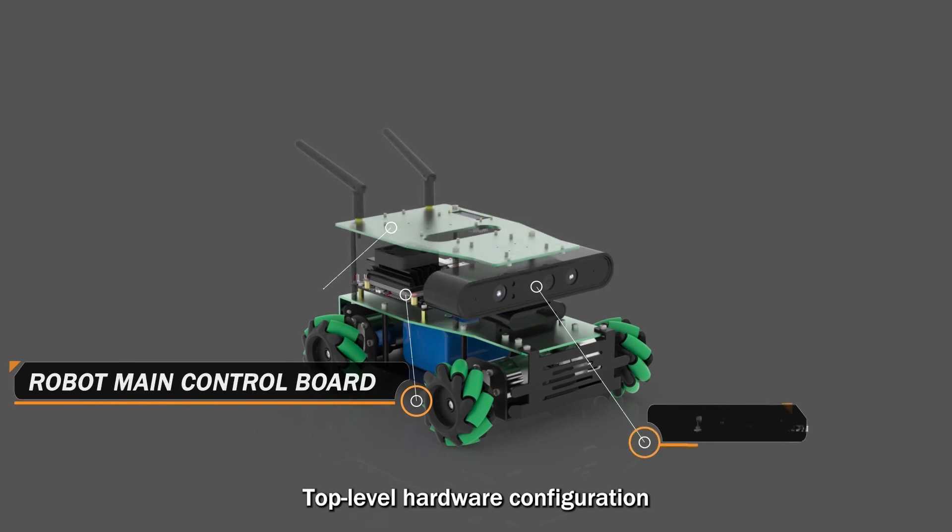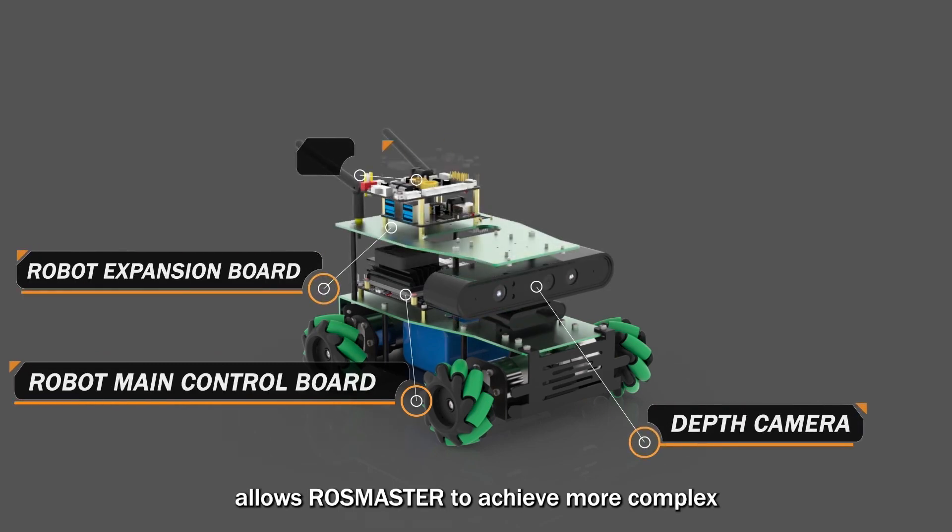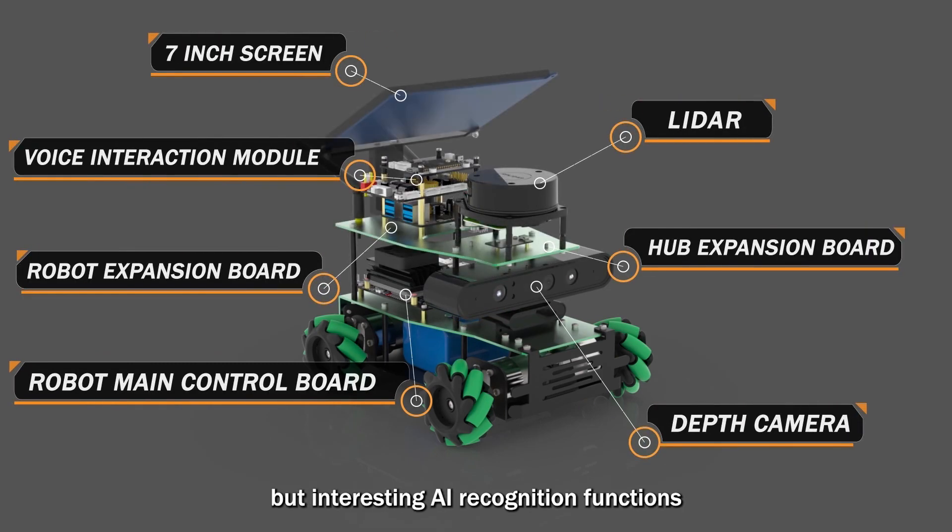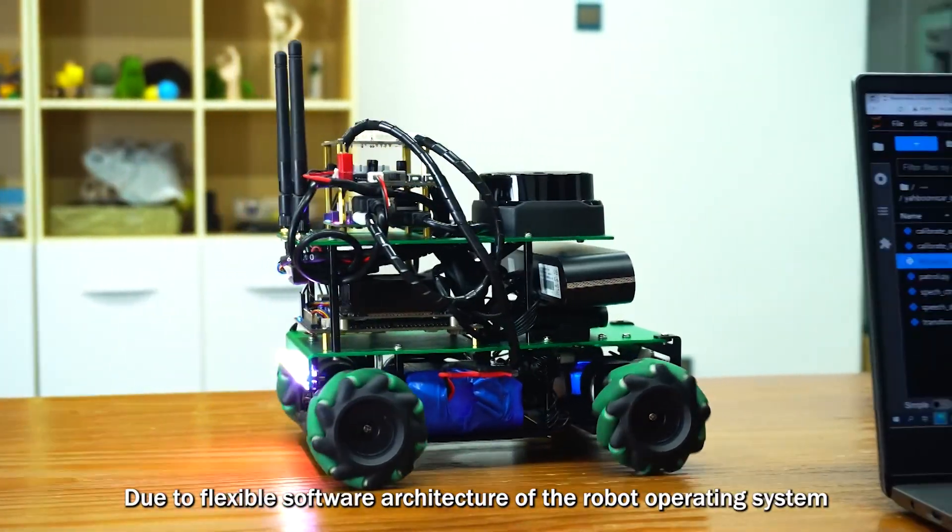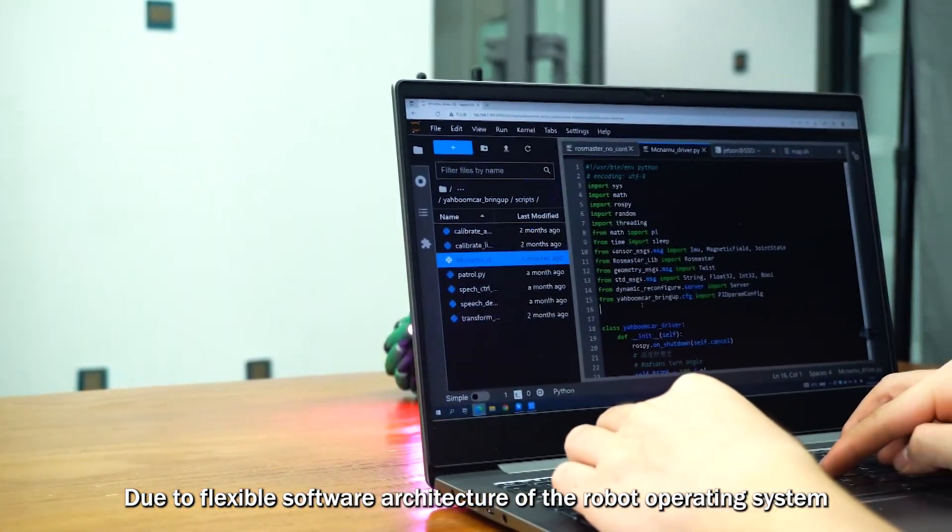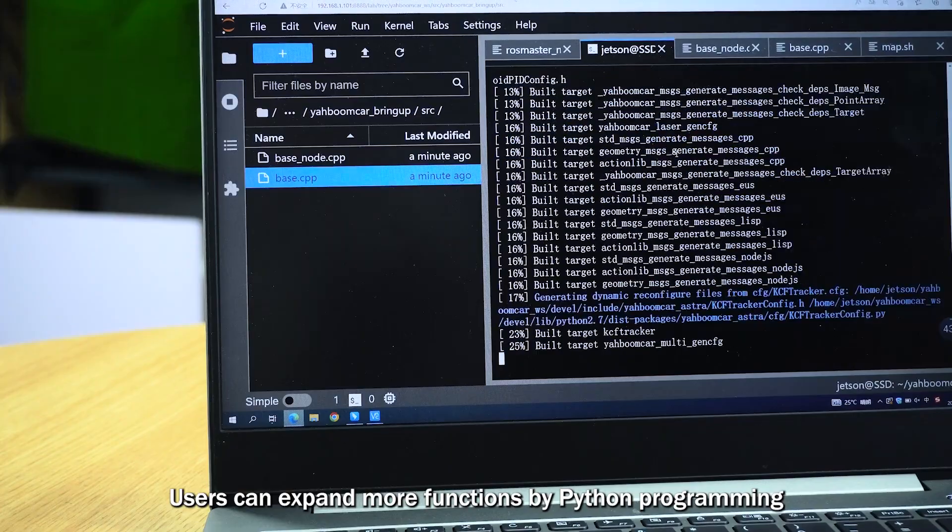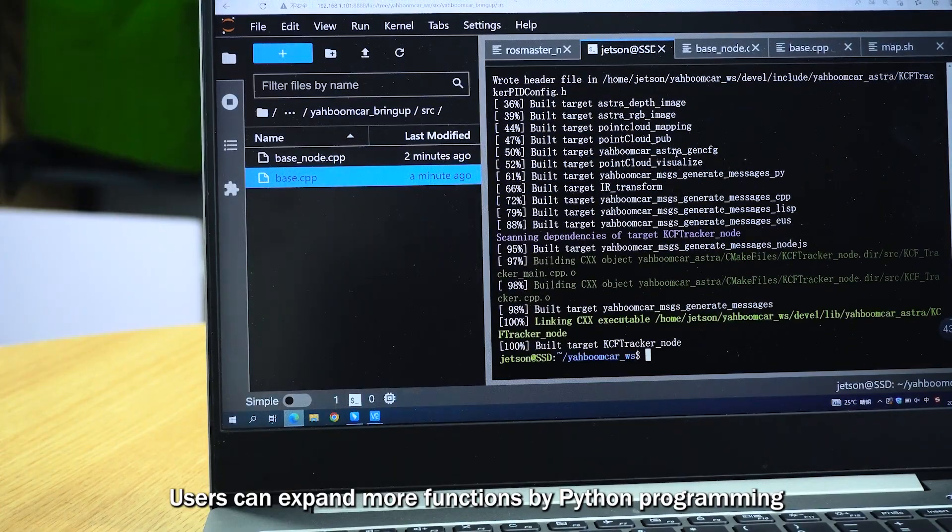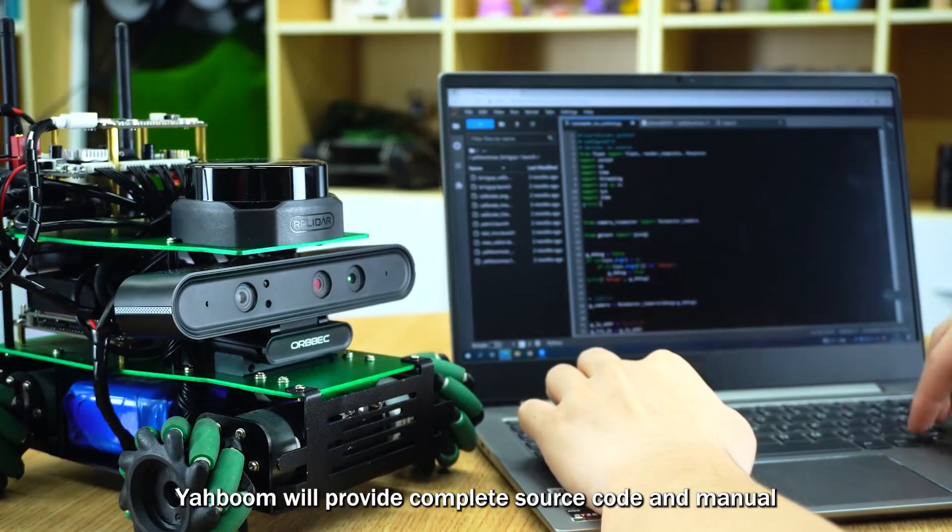Top-level hardware configuration allows Rosmaster to achieve more complex but interesting AI recognition functions. Due to the flexible software architecture of the Robot Operating System, users can expand more functions by Python programming. Yarboom will provide complete source code and manual.